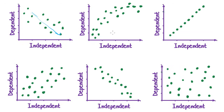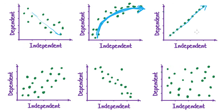Are there any outliers in this first one? No, not that we can see. For the second one, the direction is positive — as independent values increase, dependent values increase. But the form is not linear because the pattern goes in a curve, not a straight line, so that one's non-linear. The association is fairly moderately strong and there aren't any outliers. The third one looks like a perfect positive linear relationship — direction is positive, form is linear, and they're all perfectly in a line, so the strength is perfect, with no outliers.